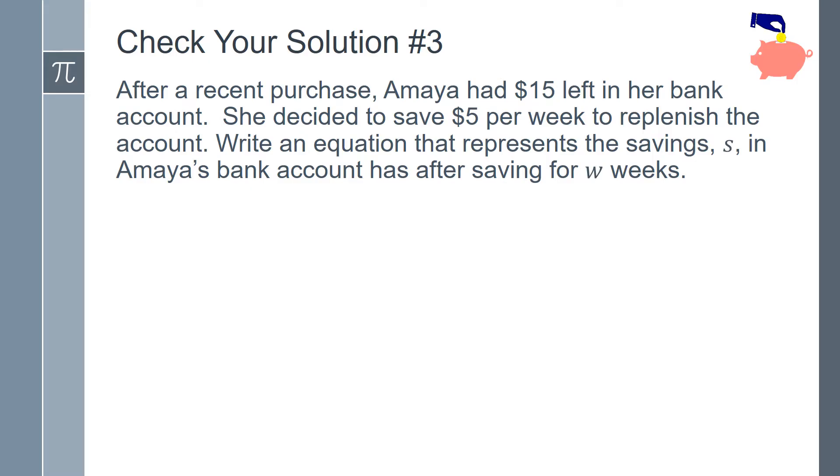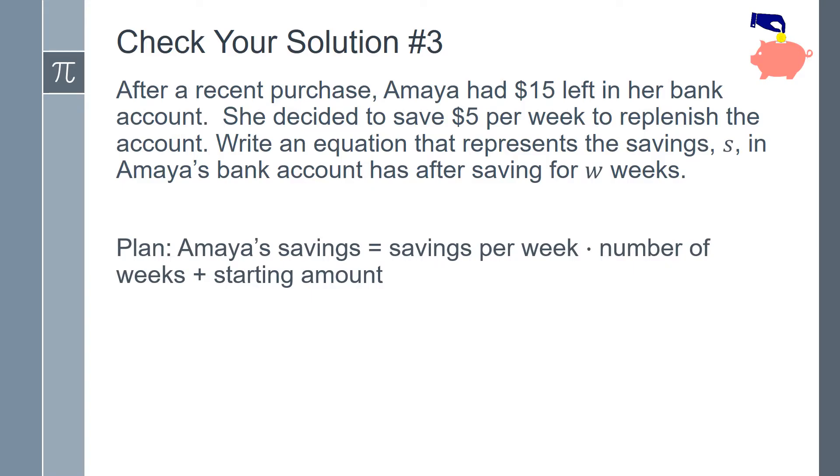The first thing that we need to do is to create a plan for writing our equation. We know that Amaya's savings equals the savings per week times the number of weeks plus the starting amount, which was $15. Now we can identify our variables. S is Amaya's savings and W is the weeks that she spent saving. So now we can write our equation: S equals 5W plus 15.